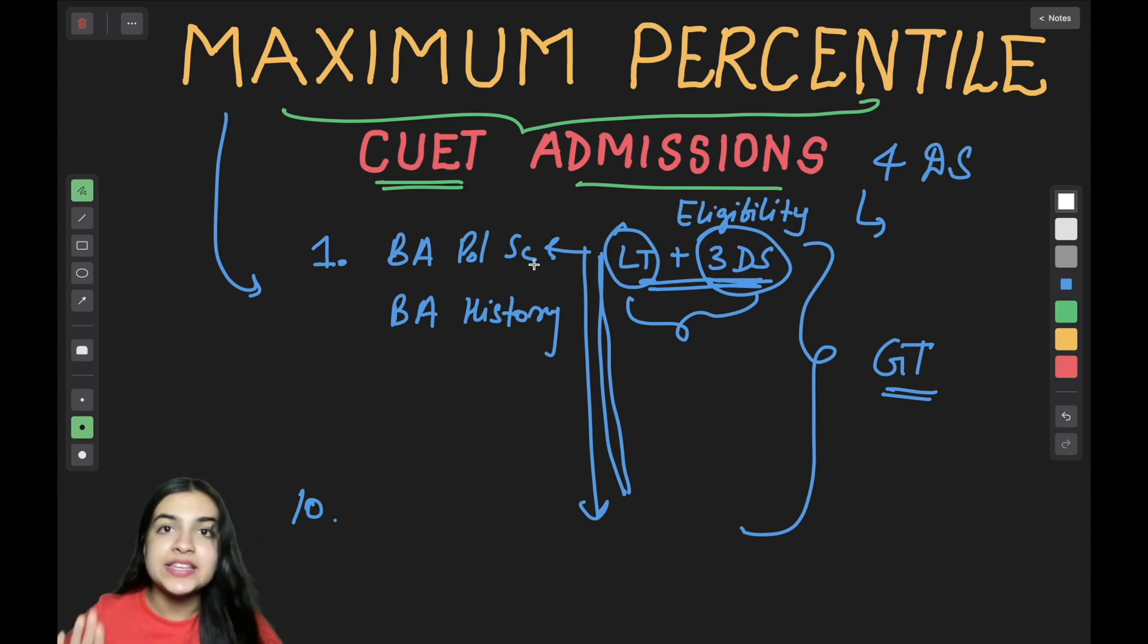Rankings will not be released in CUET. There is no rank system, you will not see rank one, rank two, rank three. I am saying this is course-wise. For the course you choose, according to that, you will get a percentile based on your chosen combination. This is something you have to keep in mind so you are sorted. Every course will have a different cutoff percentile.